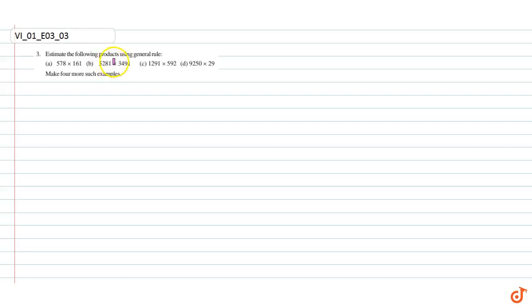In this question, we have to estimate the following products using general rule. Part A: 578 x 161.